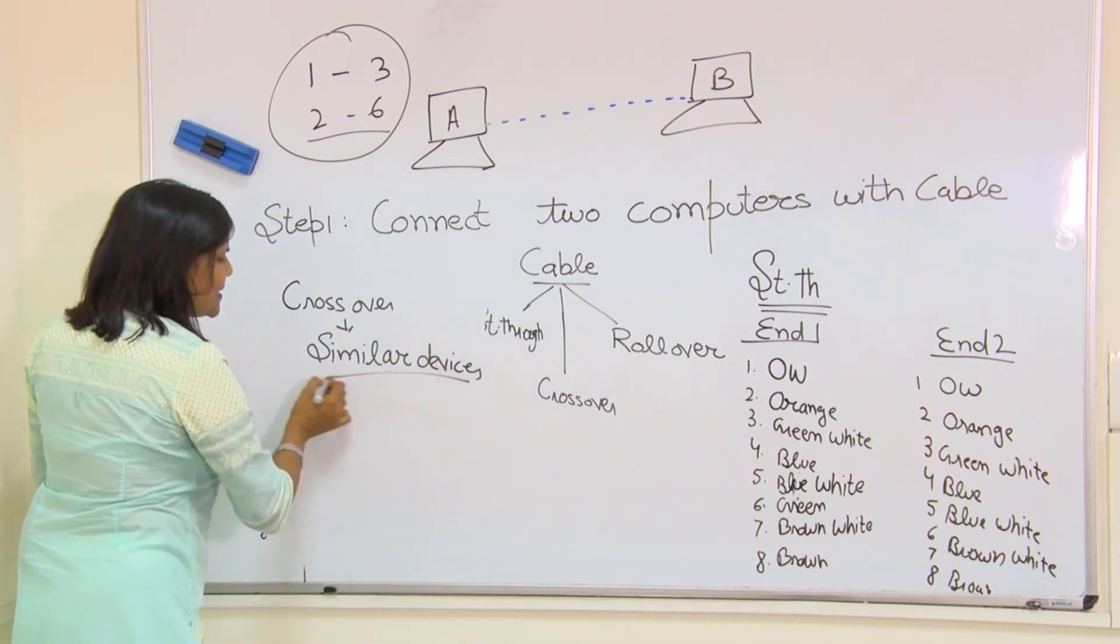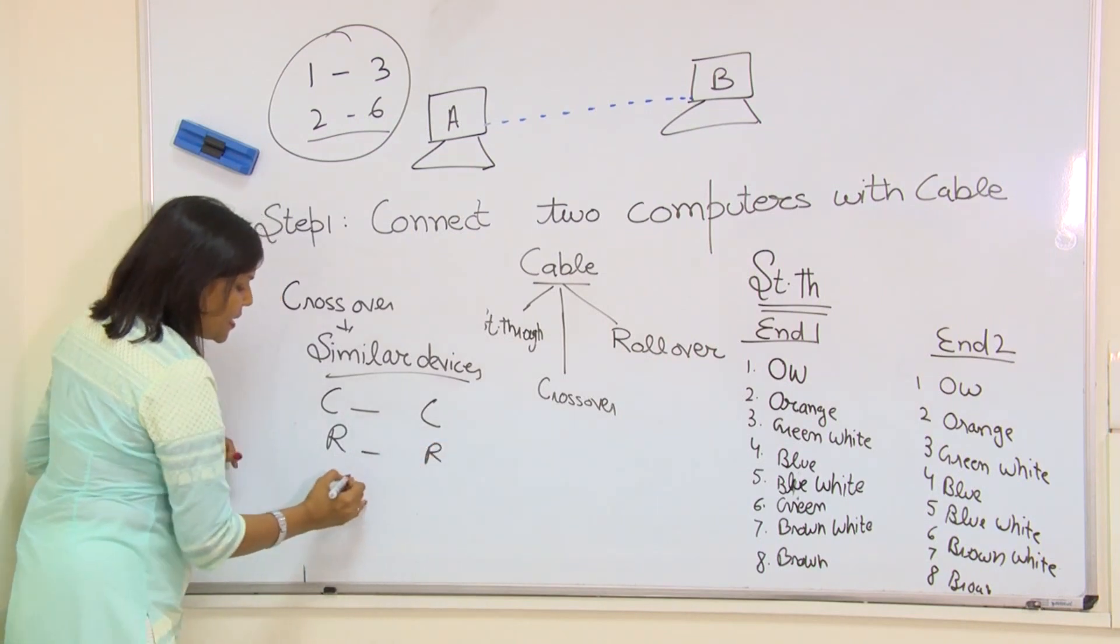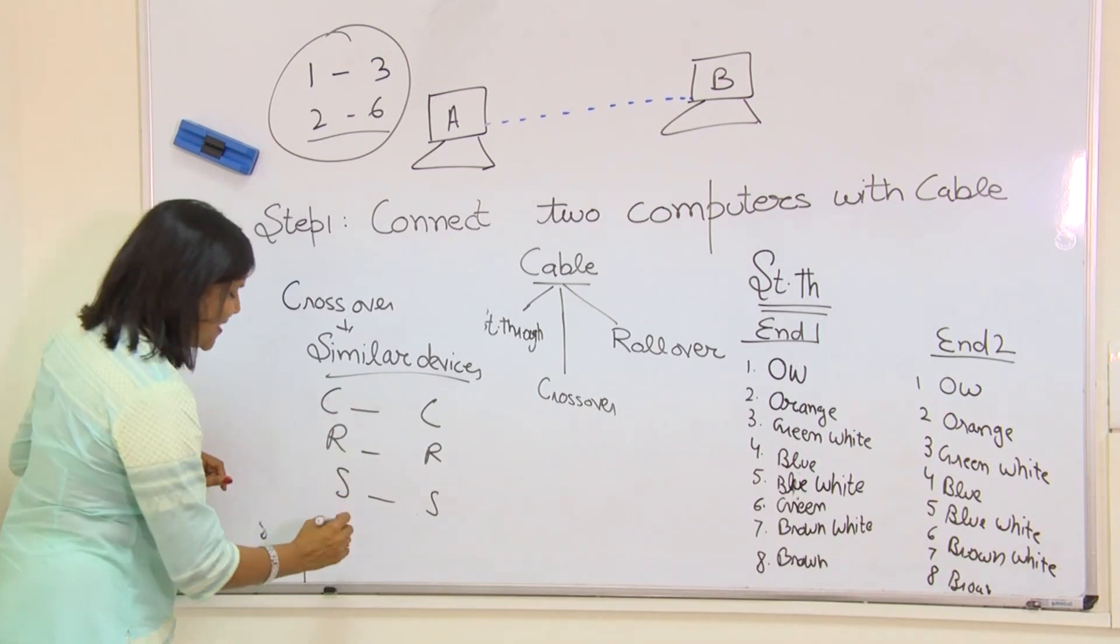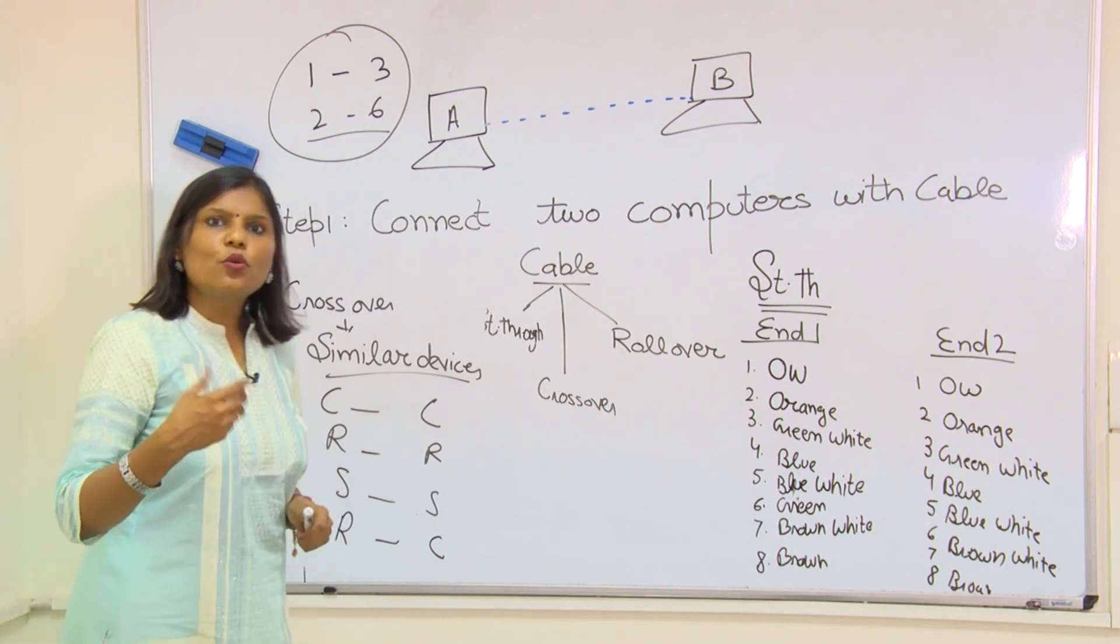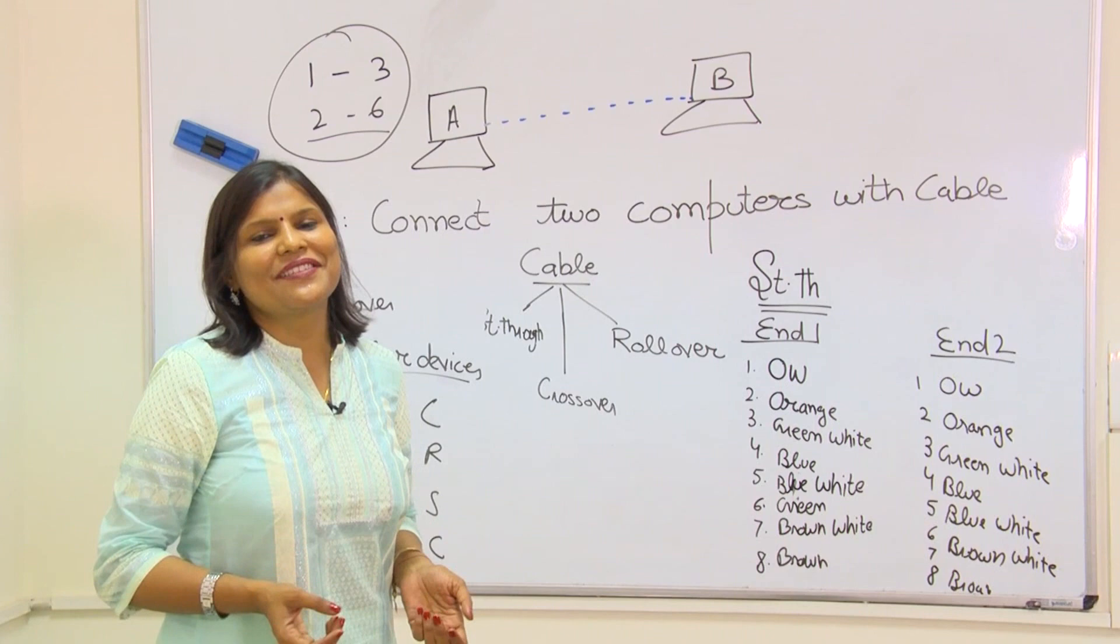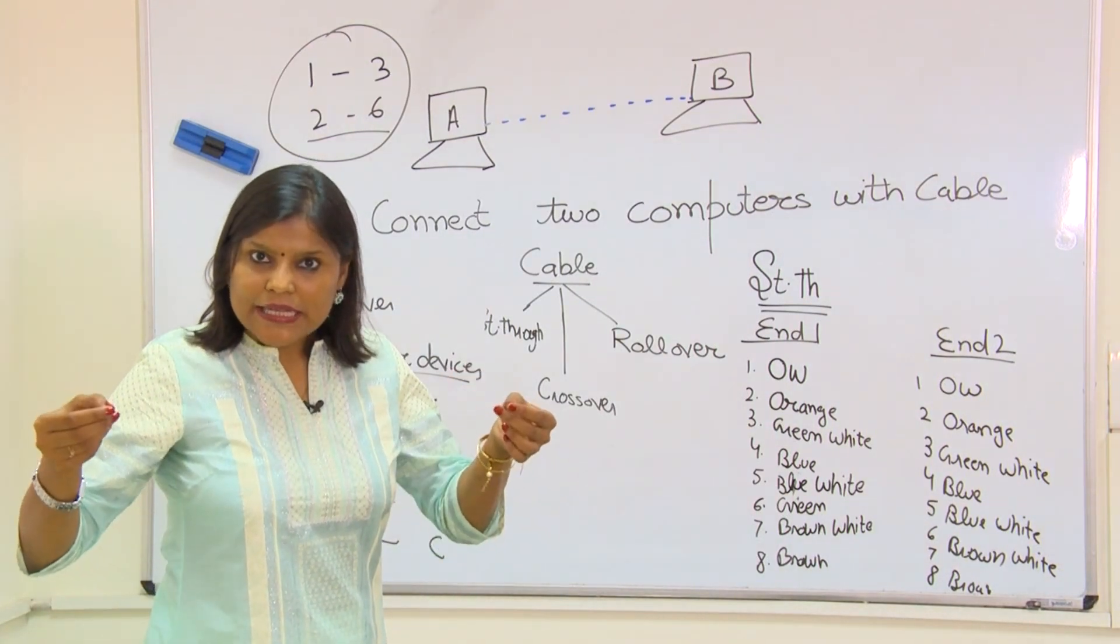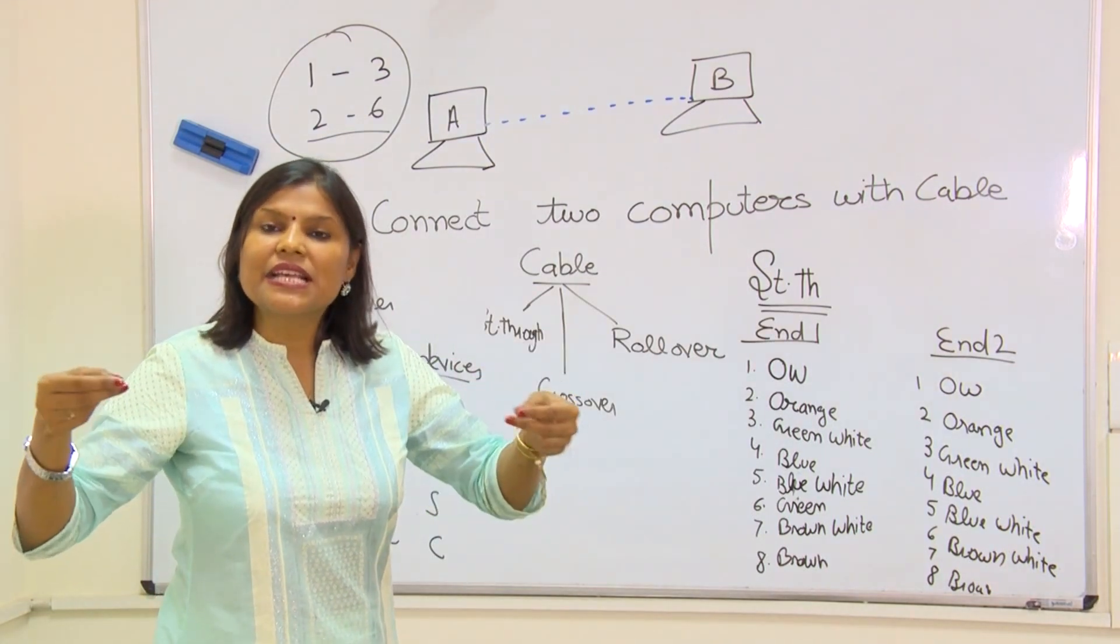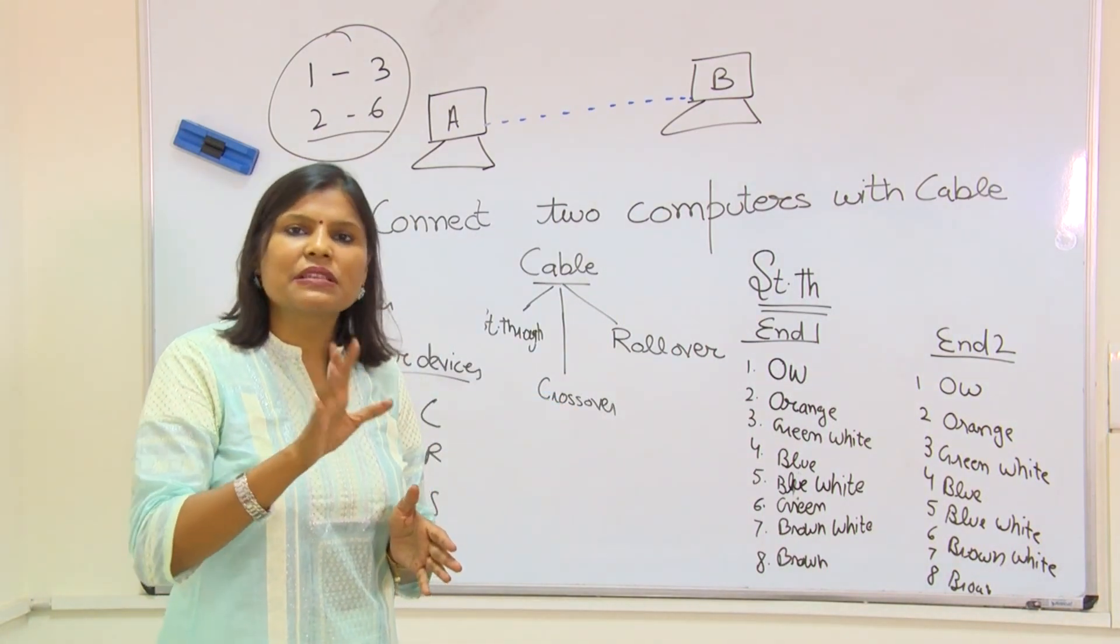Similar devices as the name suggests, computer to computer, router to router, switch to switch, but one thing exception that is router to PC, that is router to computer. Now the question comes, why router and computer are considered to be similar devices? Because their pin structure, that is from the point where they transmit the data and where they receive the data is same. So that is why computer and router are considered to be similar devices.